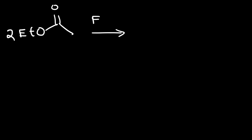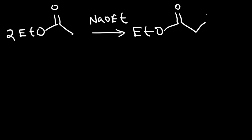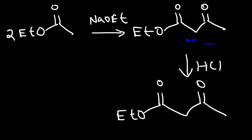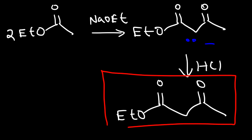So let's put it together. Under basic conditions, the two esters will react with each other. Let's say we're using sodium ethoxide. So these two esters will react to produce the deprotonated beta-keto ester. And then in step two, when you add the acid HCl, you get the neutral beta-keto ester. So make sure you understand that — this is the final product of the reaction.